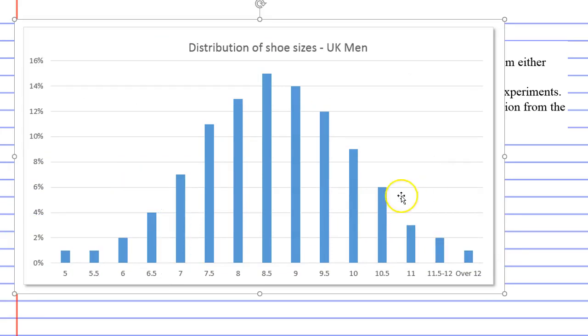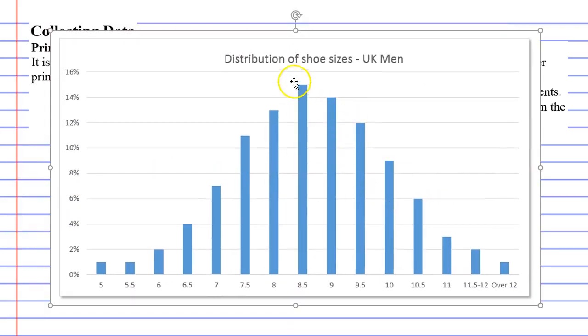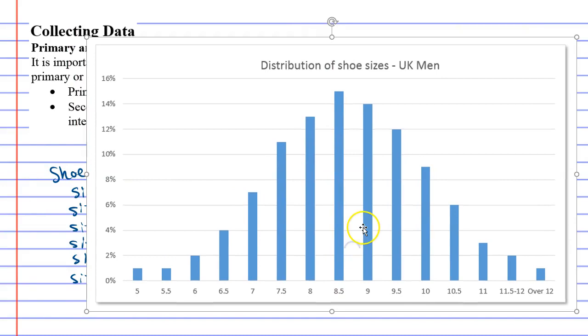This is the shoe sizes for UK men and it also has a percentage. So 15% of people had size 8.5 shoes, alright. This was quite easy to find - I just found it on Google.